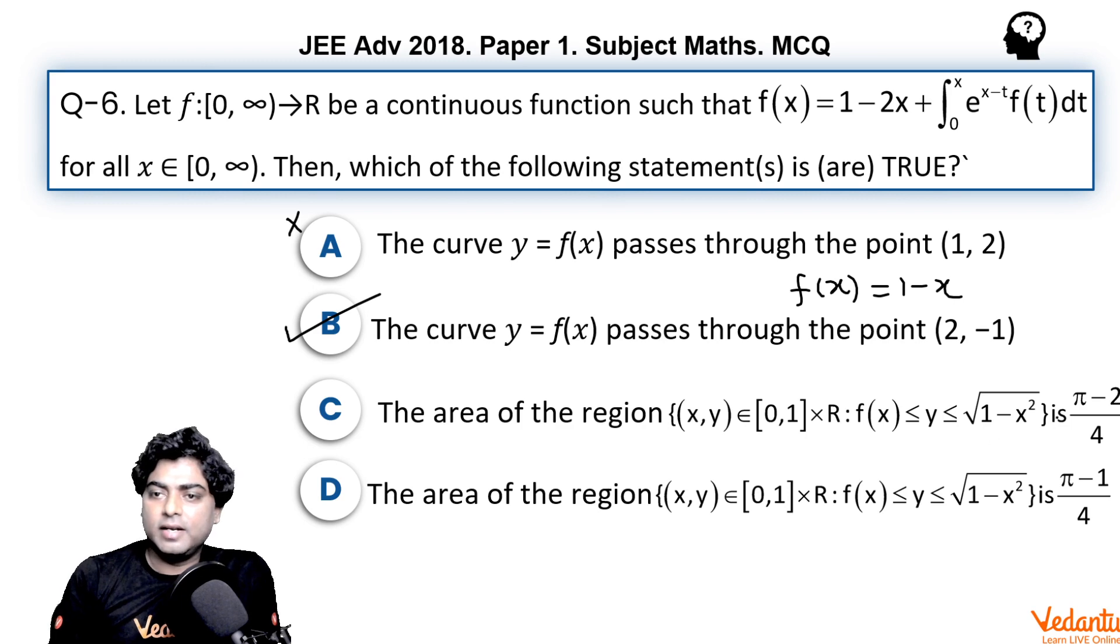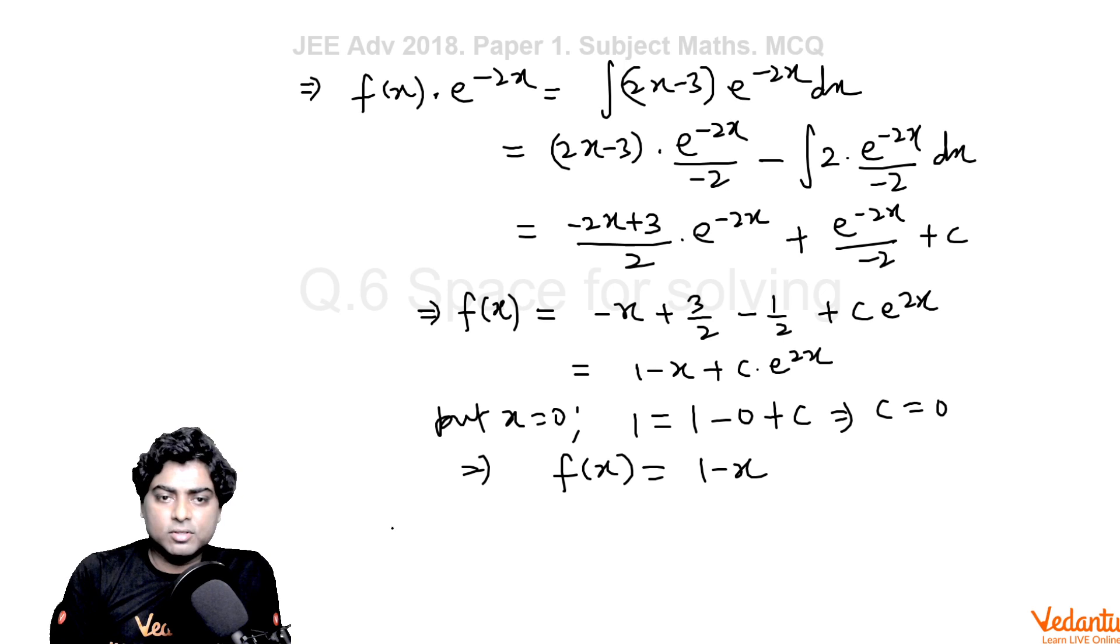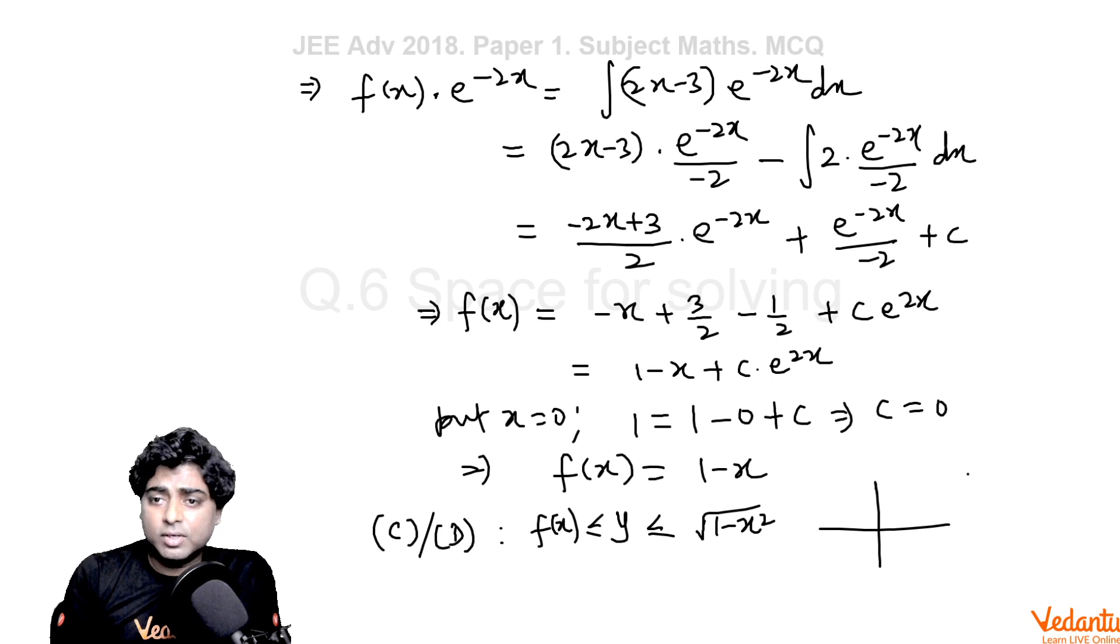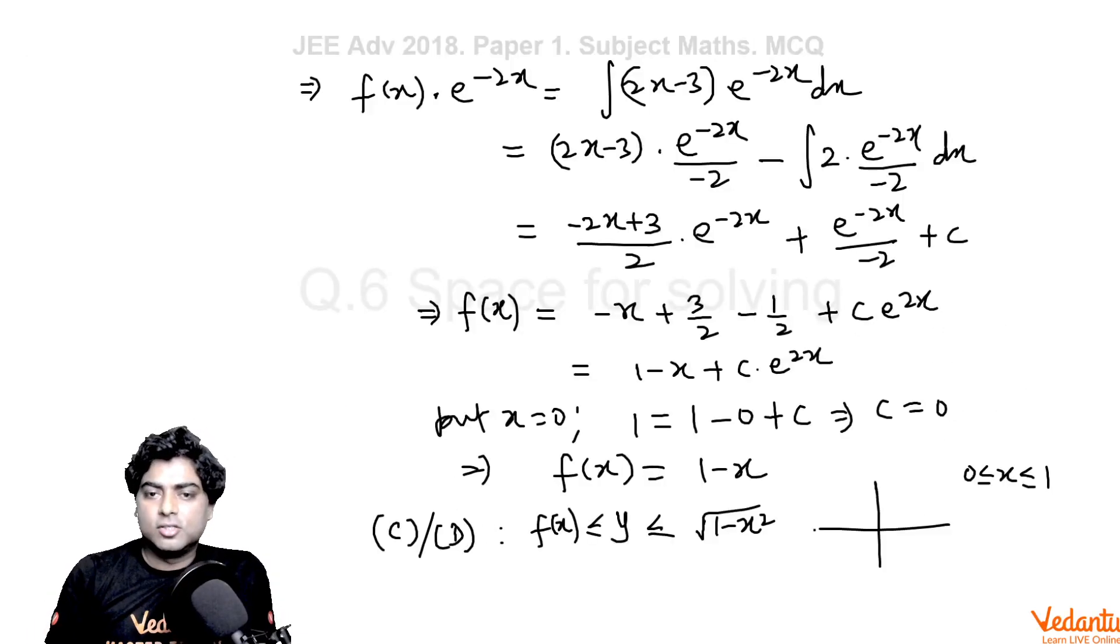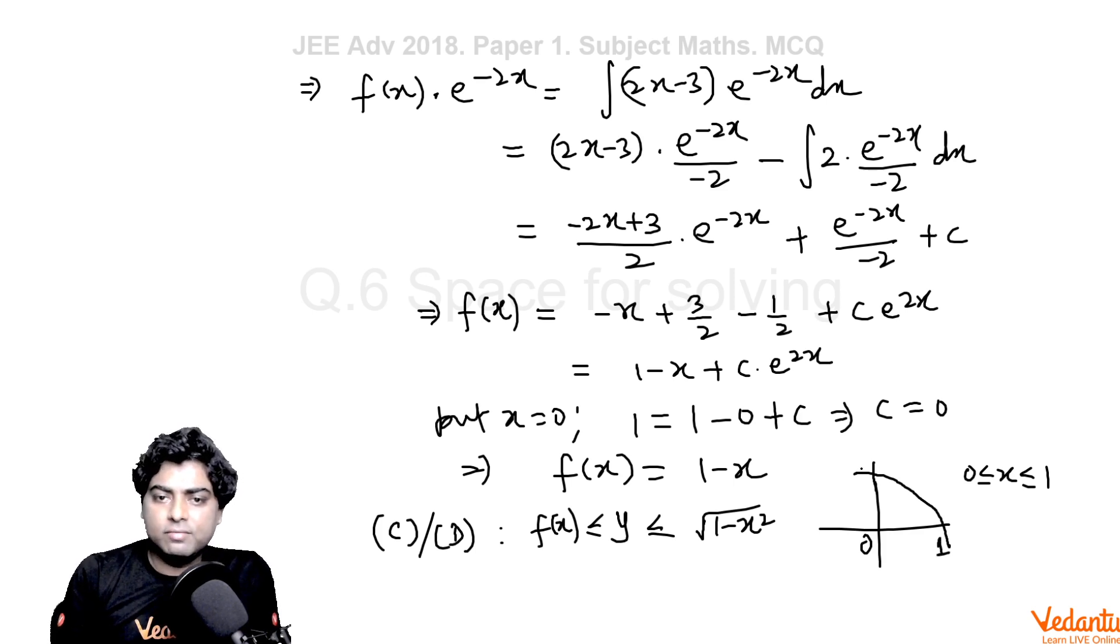The area of the region, now we'll check area. So we need to find for option C or D. y more than or equal to f(x), less than or equal to sqrt(1 - x^2), and x is from 0 to 1. The second part is actually a semicircle above x-axis, but we need to check only x is from 0 to 1, so semicircle from 0 to 1 only.